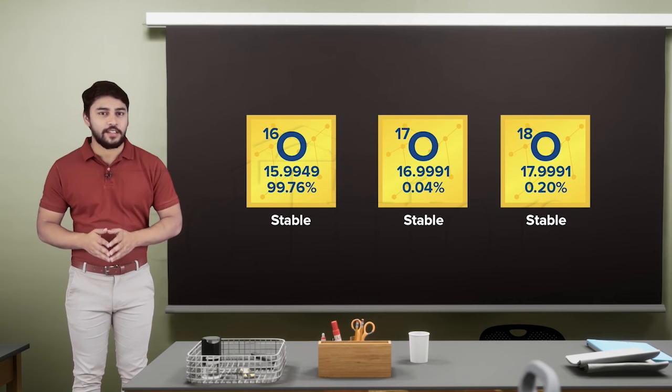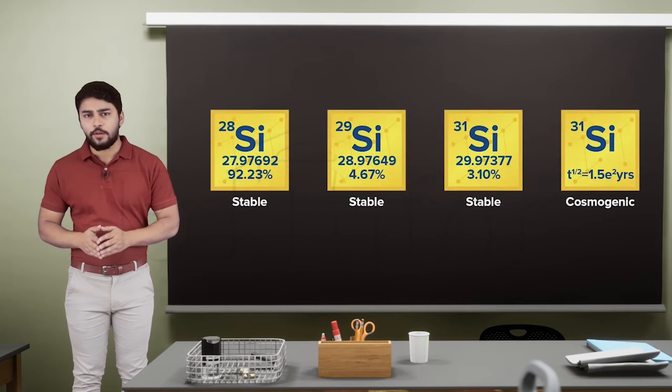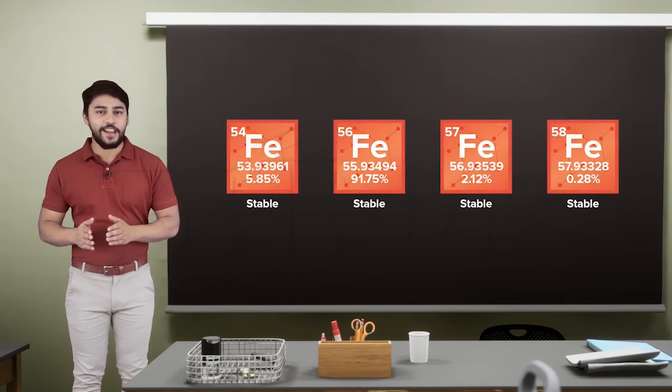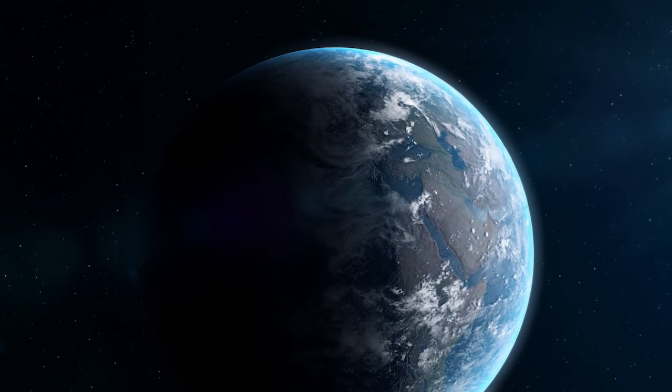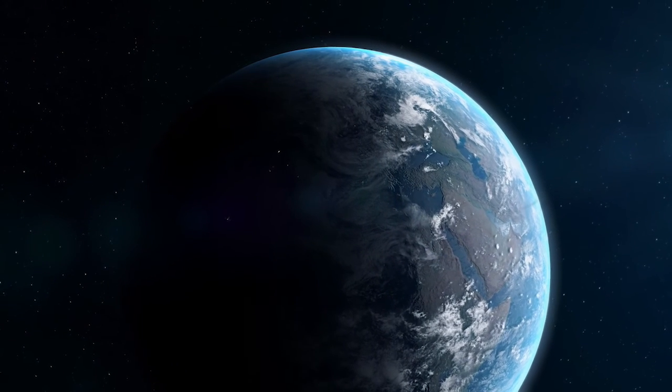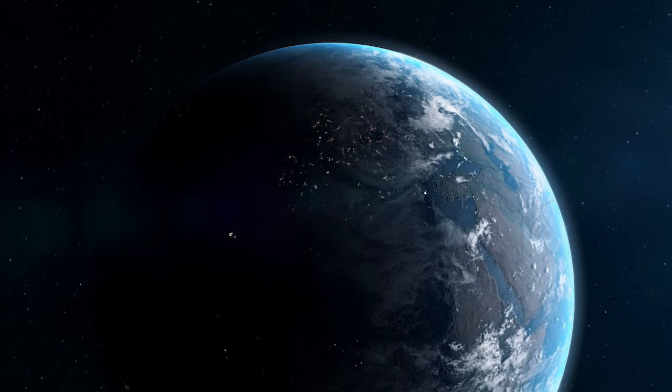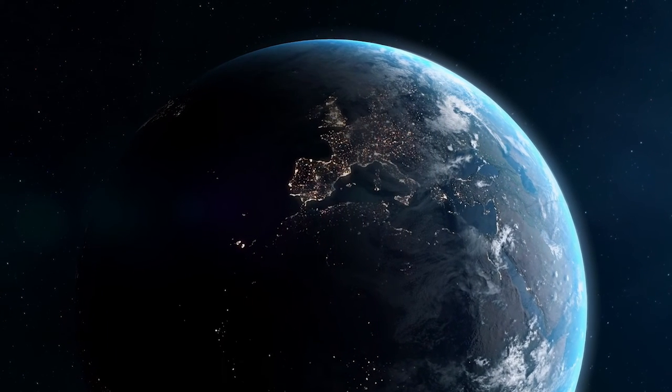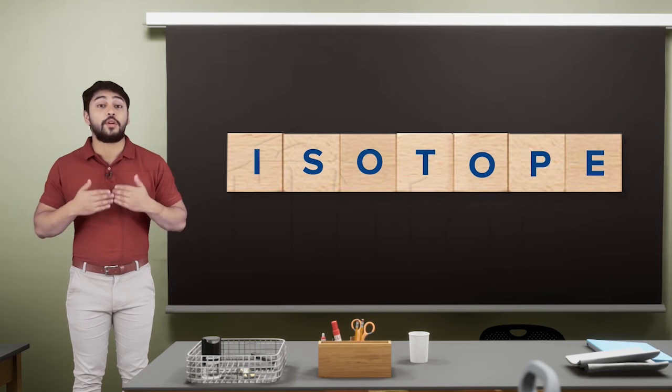For instance, oxygen, magnesium, silicon, calcium, and iron, which make up 50% of Earth's crust. And if you look closely, they all have atomic numbers which are multiples of 4. These isotopes are more abundant.